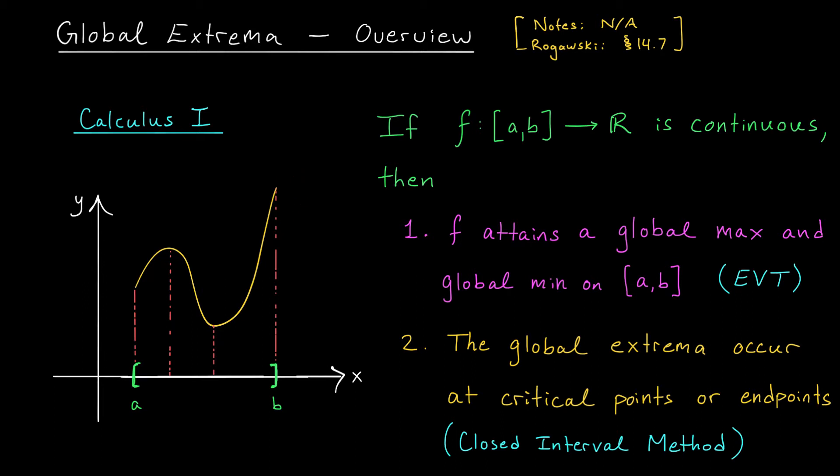Well this is fantastic because it gives us a way to find the global extrema. We would start by looking for the critical points of our function inside this interval and then we could compare the values of our function at these critical points to the values of our function at the end points. Whatever point gives us the largest value that's going to be the global max. Whatever point gives us the smallest value that's going to be the global min.